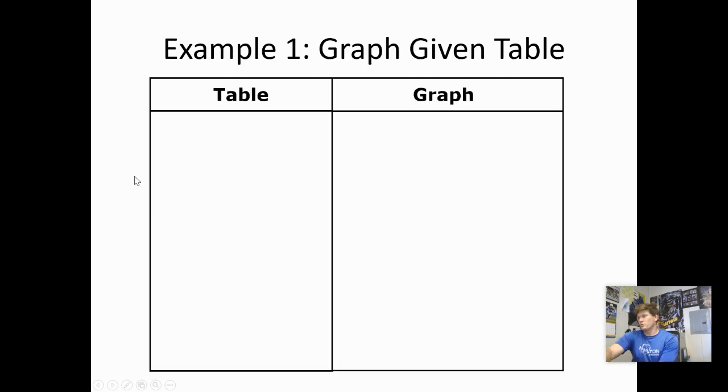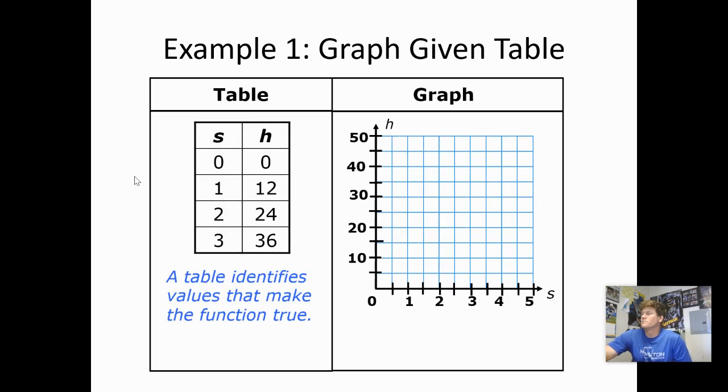Now, let's get to our examples. Given a table, can you graph it? Here's our table. It's a vertical table. It has our input values on the left, our outputs on the right. We're talking S versus H. S is 0, 1, 2, 3. H is 0, 12, 24, 36. What we're going to do is take each input versus output and graph them on our coordinate plane. Since everything was positive and 0, all we needed was the first quadrant of this coordinate plane.